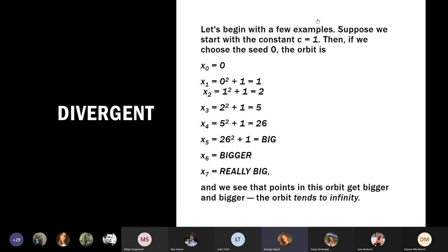Here are examples to better understand these sequence types. For x(n) = x(n−1)² + 1 with x₀ = 0: x₁ = 0² + 1 = 1, x₂ = 1² + 1 = 2, x₃ = 2² + 1 = 5. We can do this infinitely many times and every x is bigger than the previous one. The orbit gets bigger and bigger, tending to infinity — this is a divergent sequence.